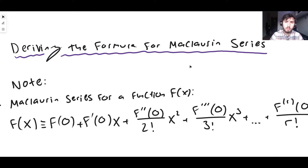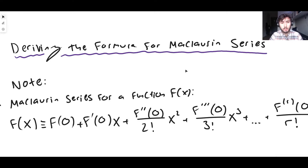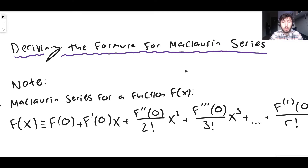The idea behind the Maclaurin series is that you can express quite a lot of functions in terms of something called a power series, which is basically like an infinite polynomial. For example, you can express sine x as a polynomial — it's infinitely long with an infinite number of terms — and the same with cos x and e to the x.